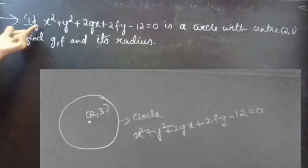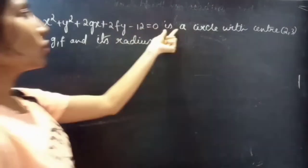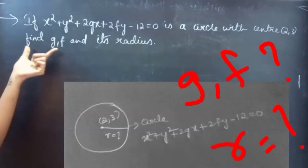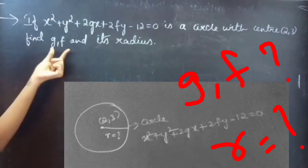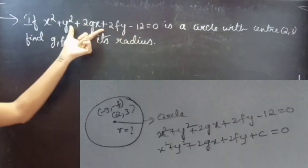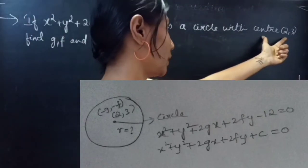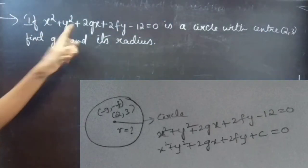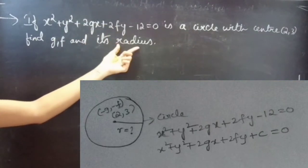Problem: if x squared plus y squared plus 2gx plus 2fy minus 12 equals to 0 is a circle with center 2 comma 3, that is ordered pair (2, 3), find g, f and its radius. We are given a circle and its center ordered pair (2, 3) and we are asked to find the values of g and f and also its radius.